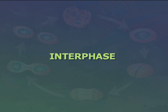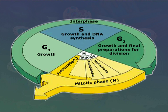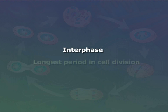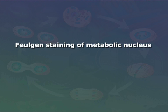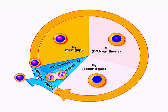Interphase and its apparent phases: the time from the end of one mitosis to the start of the next is called interphase. It is the phase between the end of the last telophase and the subsequent prophase, and it is the longest period in cell division. Feulgen staining of the metabolic nucleus followed by cytophotometric quantitative assay first suggested that doubling of DNA takes place during interphase.